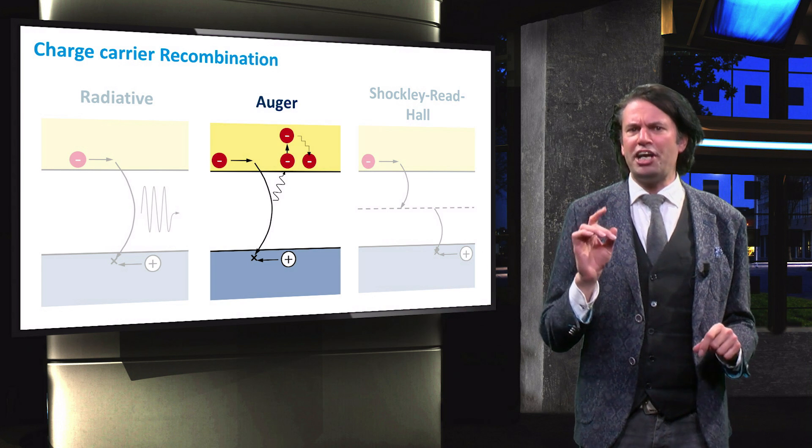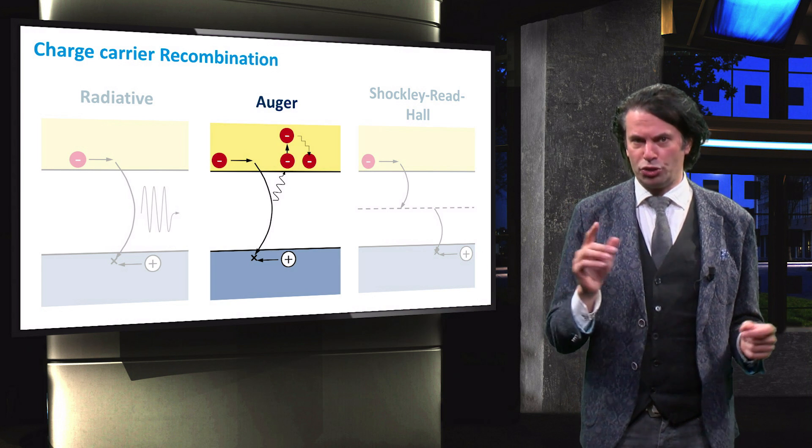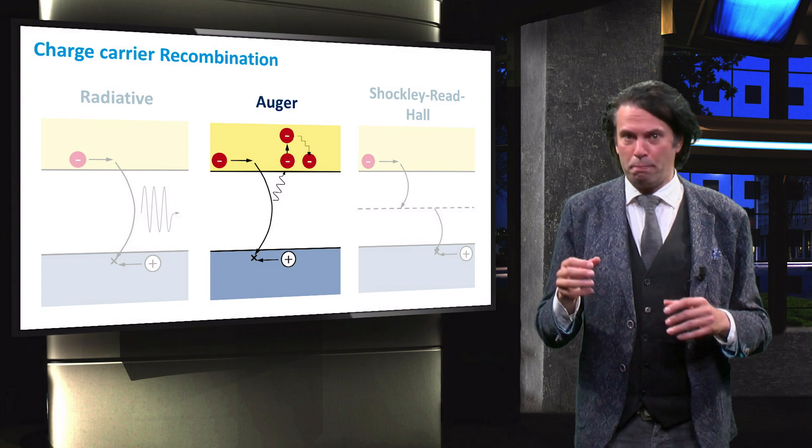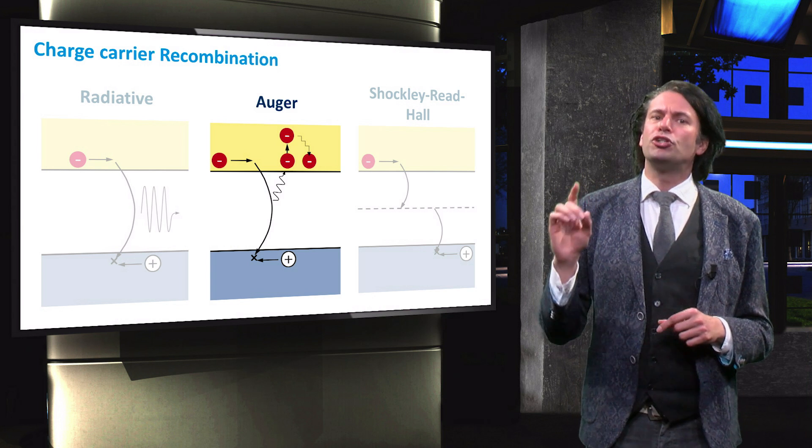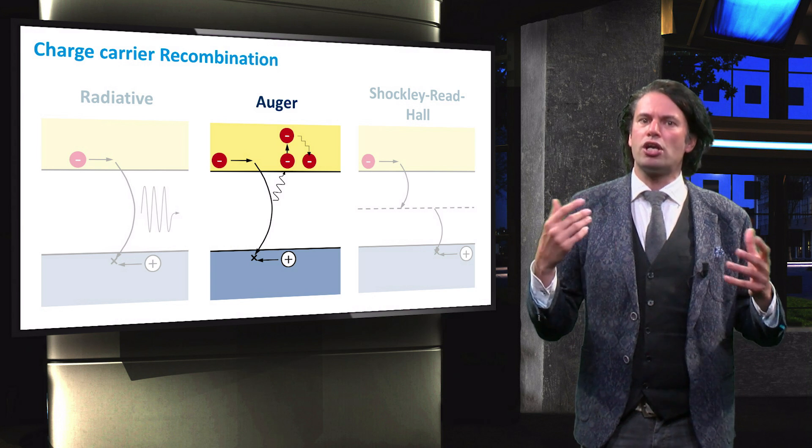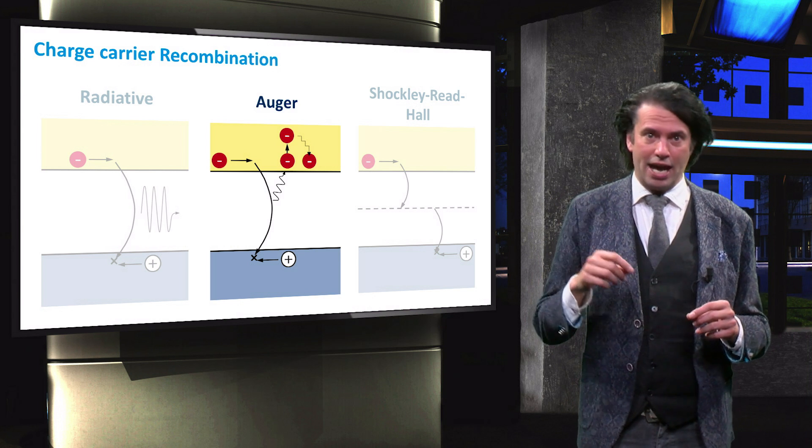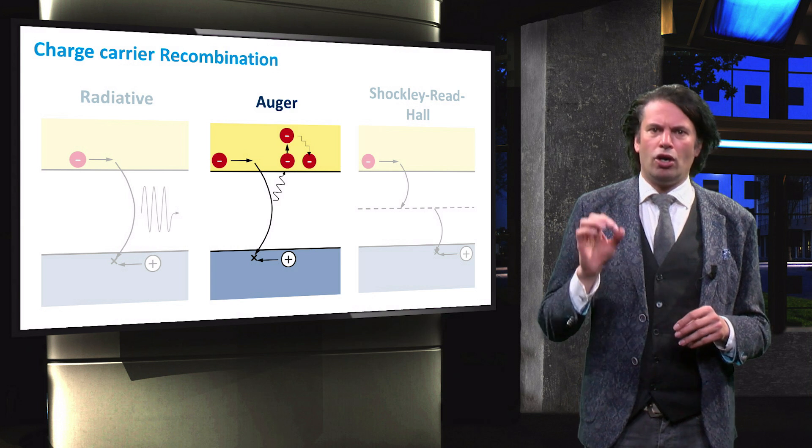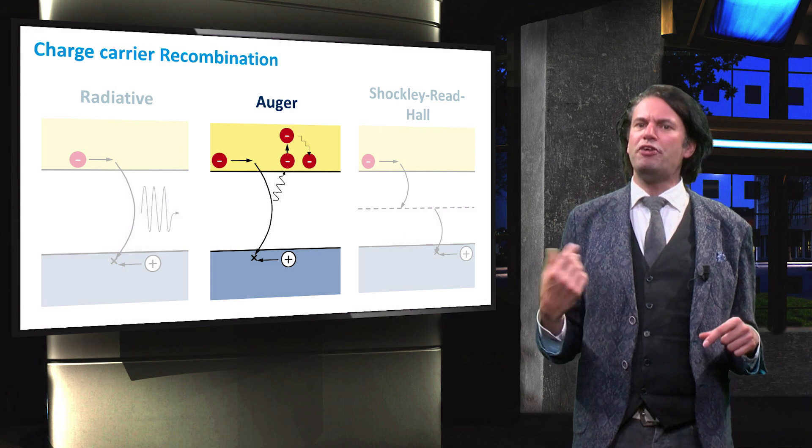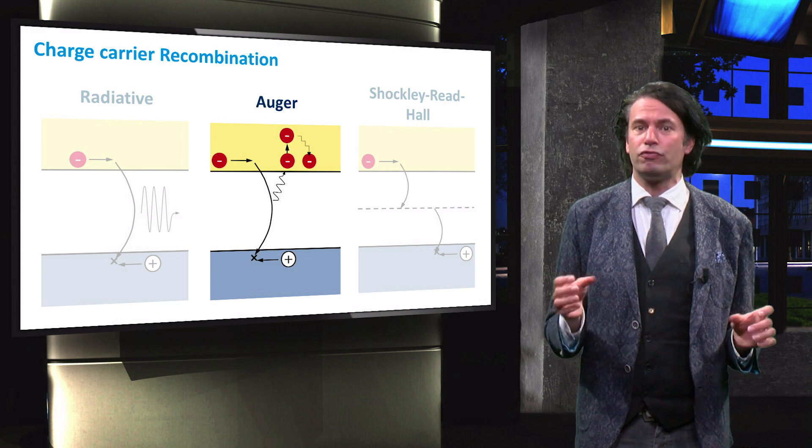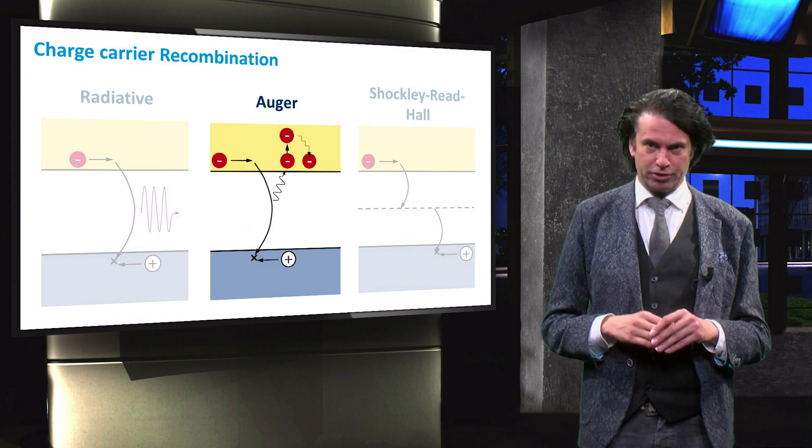Finally, Auger recombination. As Auger recombination is a three-particle process, the Auger recombination rate strongly depends on the charge carrier densities for the electrons n and holes p. Under normal circumstances, Auger recombination is insignificant for direct band gap materials.